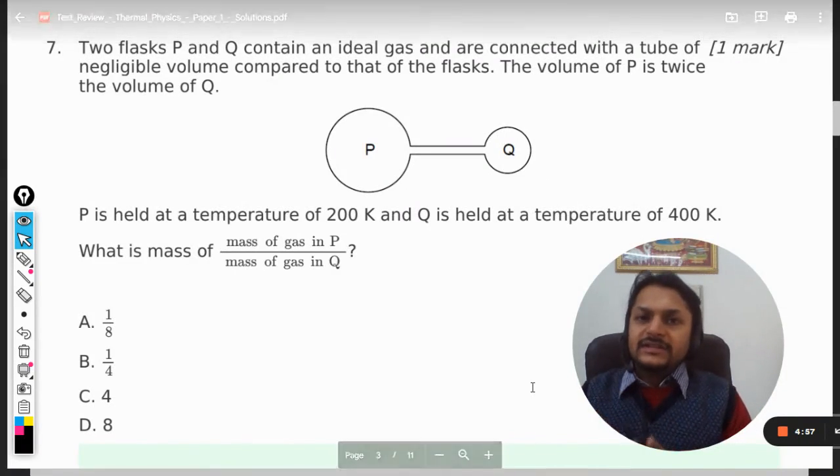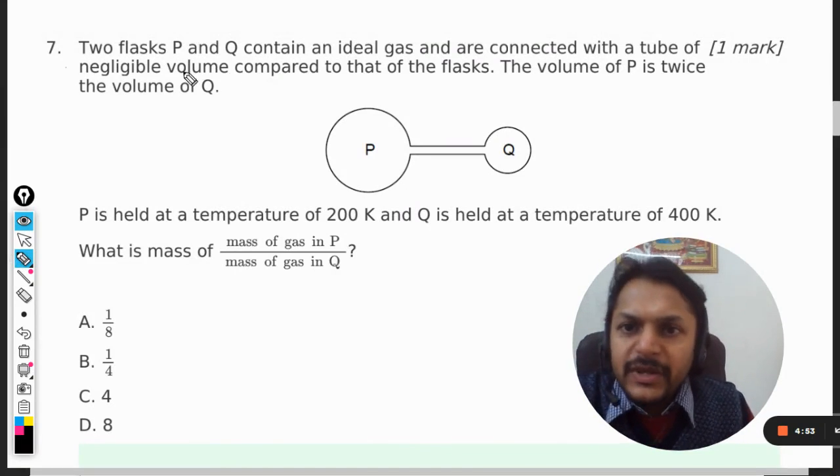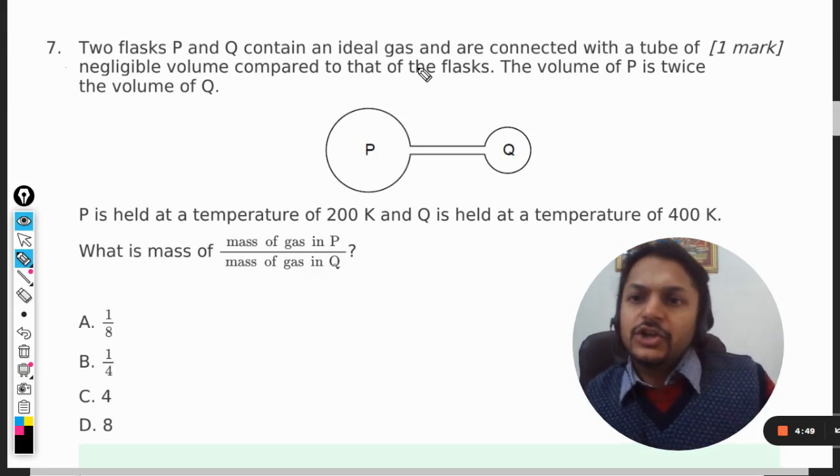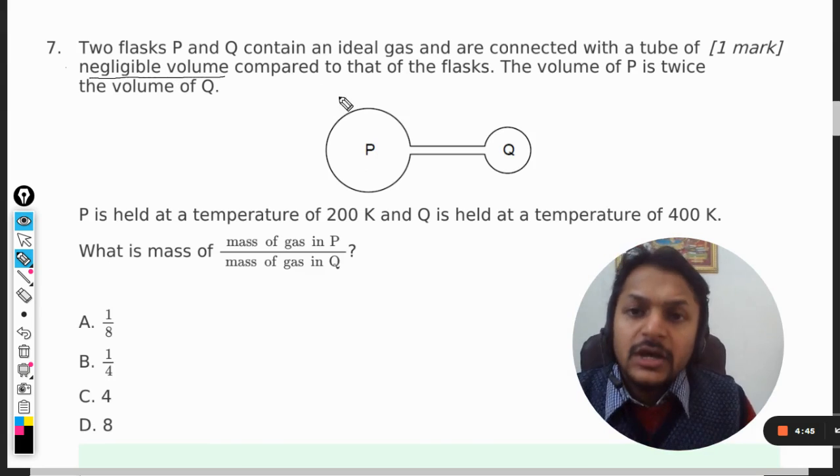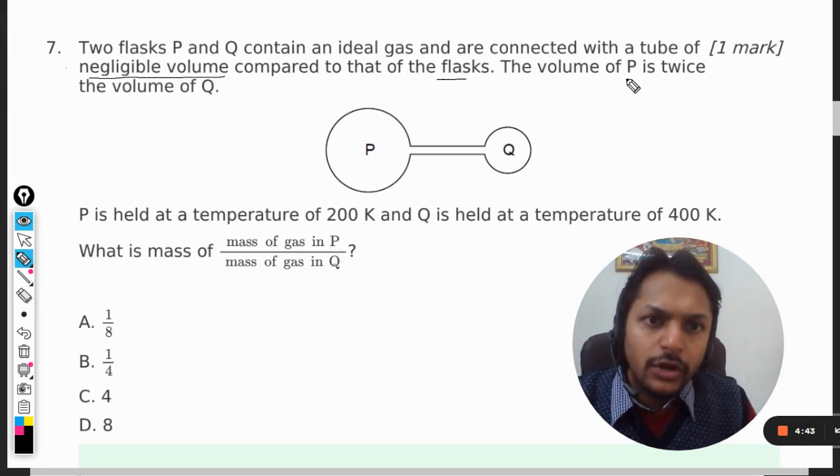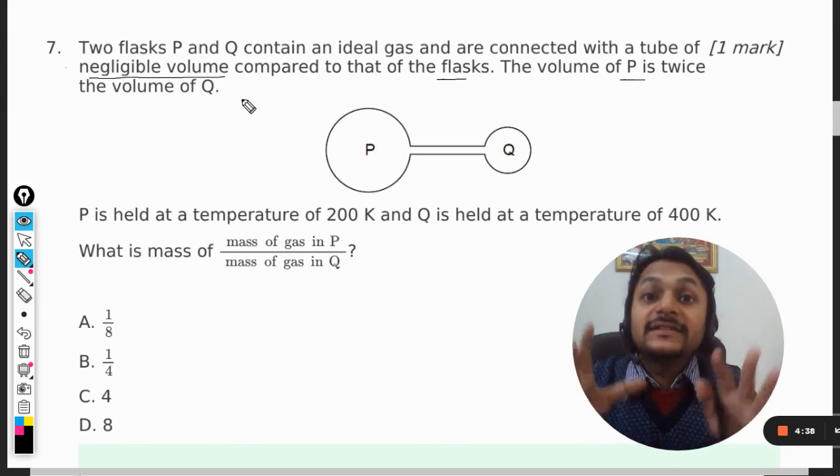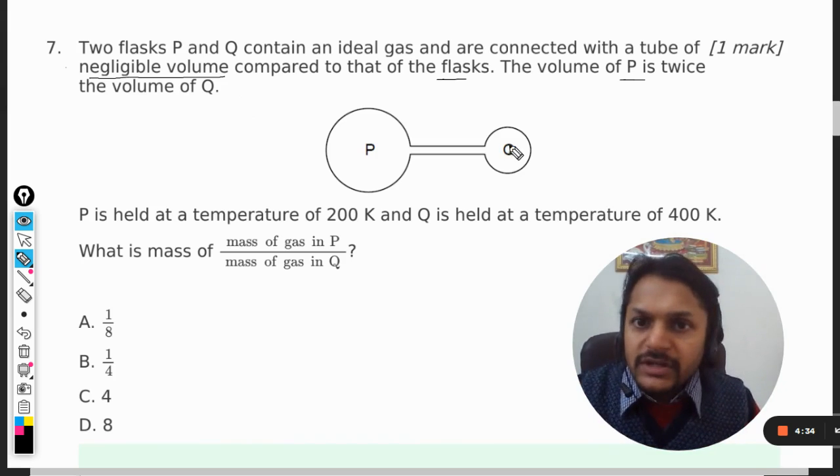Okay dear students, let us see what is there in this question. Two flasks P and Q contain an ideal gas and are connected with a tube of negligible volume. This is a very important condition compared to that of the flask. The volume of P is twice that of Q. Now there are two chambers containing the same gas, so the molecular mass is the same, but the volumes are different.